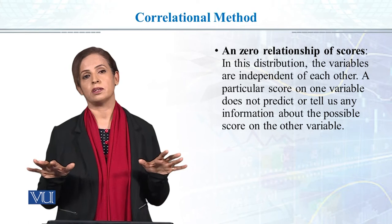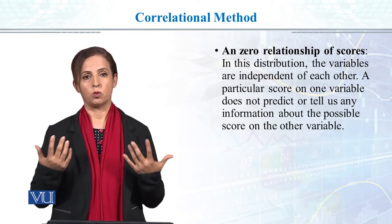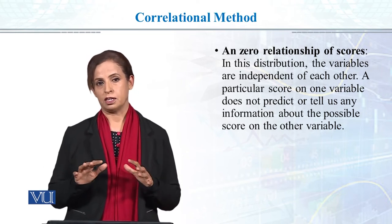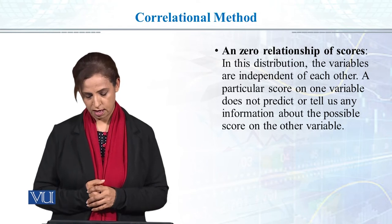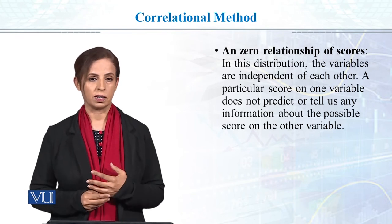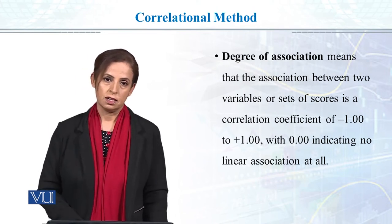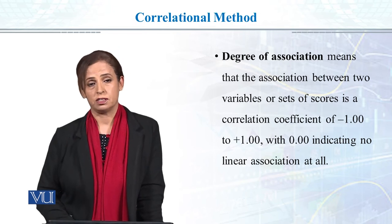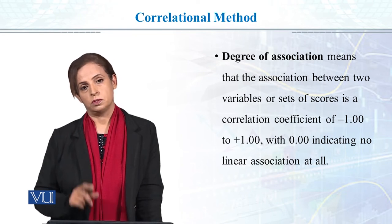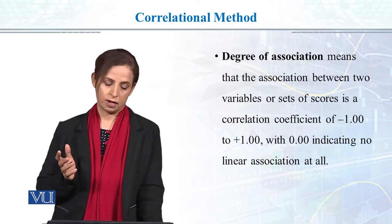We have many examples of zero correlation, such as two variables that are completely independent. The correlation coefficient ranges from minus 1 to plus 1 — the stronger the correlation, the bigger the coefficient; the weaker the correlation, the smaller the coefficient. One very important thing: correlation is not causation. That means you cannot establish a cause-and-effect relationship with correlation alone.